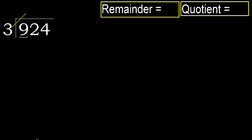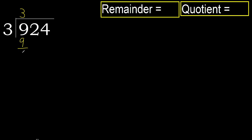3 multiplied by 4 is 12 — it's greater. Multiply by 3: 9 is not greater. Subtract: 9 minus 9 equals 0.